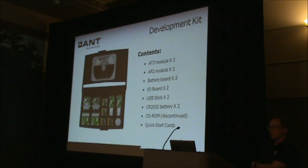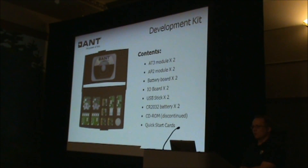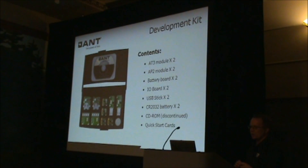If you're looking to design with ANT, your first step is probably to get an ANT development kit. The dev kit provides a very nice user experience for developers and comes with a collection of modules that can be used for development as well as production. The current DevKit has two AT3 modules, two AP2 modules, a battery board with a 2032 coin cell battery harness, a breakout board to interface your external microprocessor, and a little IO board with lights and buttons for development.